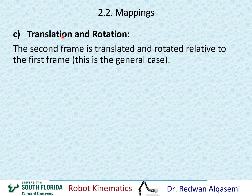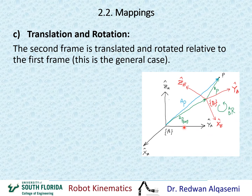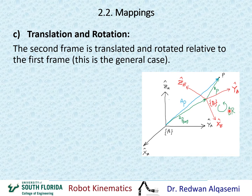In the case when I have both translation and rotation of a frame relative to another, the second frame is translated and rotated relative to the first frame — this would be the general case. I have frame A here in black, and I have frame B in red, and the relationship between A and B is known. We have translation in green defined by P of B origin relative to A, and we also have rotation defined by the rotation of B relative to A. So frame B is both rotated and translated relative to A.